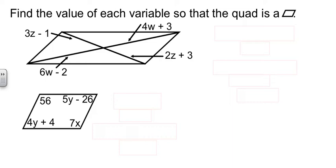Now our next job is to find values of the variables so that we can say our quadrilateral is indeed a parallelogram. And they've given us this nice quadrilateral that has diagonals going through it. Well if it's going to be a parallelogram, then the diagonals have to bisect each other. That is to say that 3z minus 1 has to be equal to 2z plus 3. Subtract the z's over and add the 1 over and we get z equals 4.